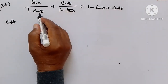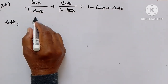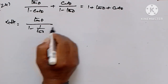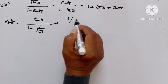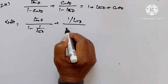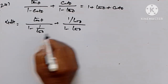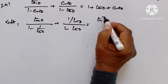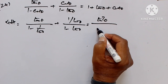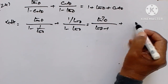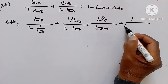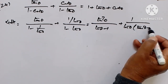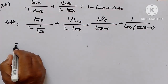Therefore it equals tan θ upon (1 - 1/tan θ) plus (1/tan θ) upon (1 - tan θ). Solving this we get tan θ · tan θ upon (tan θ - 1) plus (1/tan θ) upon (tan θ - 1).